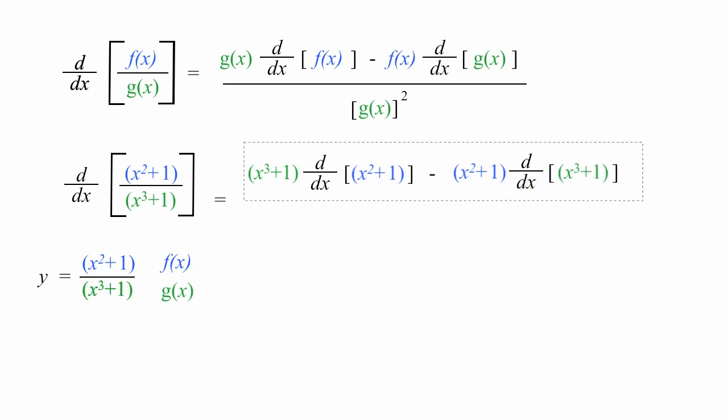That takes care of the numerator. For the denominator, I make a line or divide by g of x squared, or x cubed plus 1 squared. I'm going to take two derivatives.